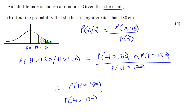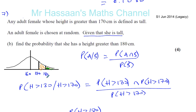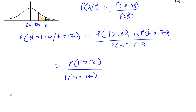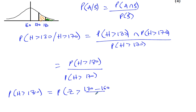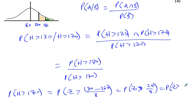We already worked out P(height > 170), so now we've got to work out P(height > 180). The probability that height is greater than 180 equals the probability that z is greater than (180 minus 160) over 8, which is the probability that z is greater than 20 over 8, which is 10 over 4, which is 5 over 2, which is 2.5. So we've got to find the probability that z is greater than 2.5.